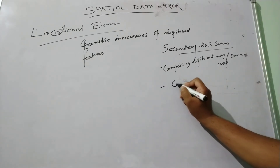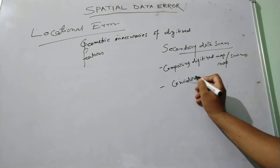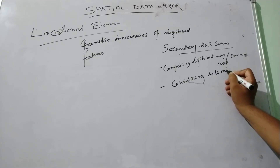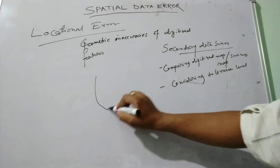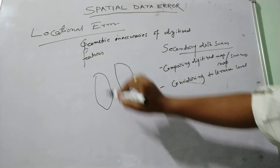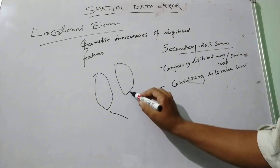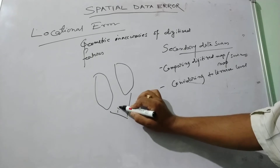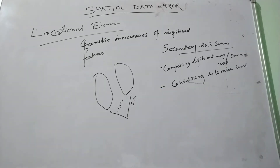During considering our tolerance level, suppose there is one organization and there is another organization. They are doing the same project, but one is considering a tolerance of 1 meter while the other is considering a tolerance level of 5 meters. So these inaccuracies cause locational errors.